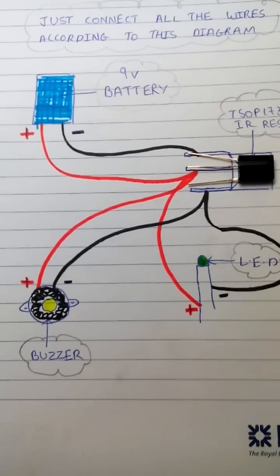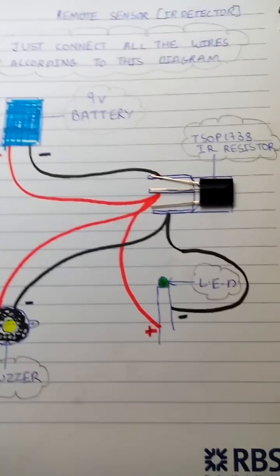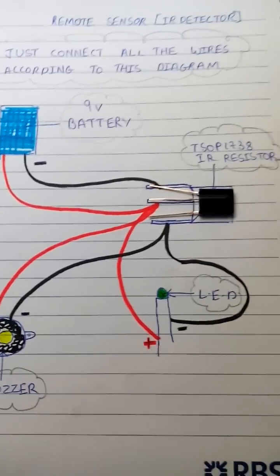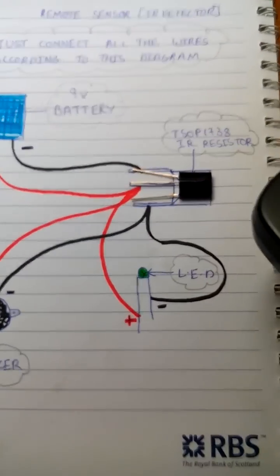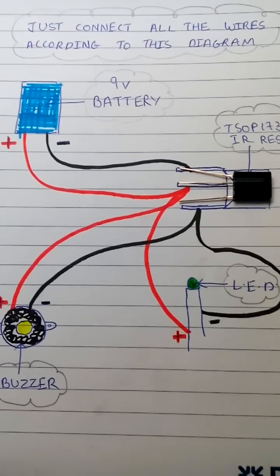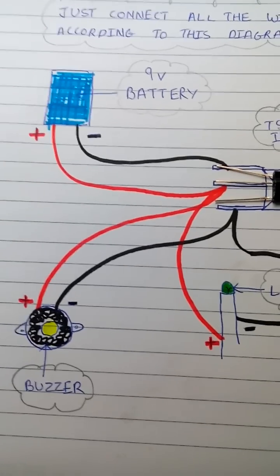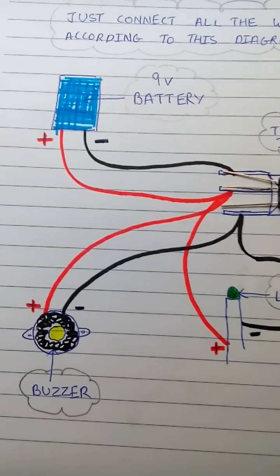After you have connected all of this, then your remote sensor is sure to work. You just need to get a remote next to it and once you press the button, it will give its output. The output is that the buzzer will make noise and the LED will glow.